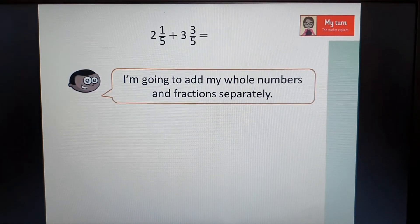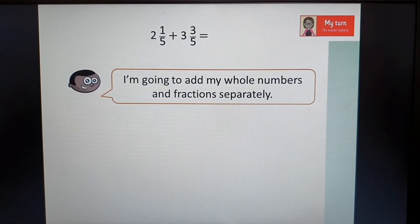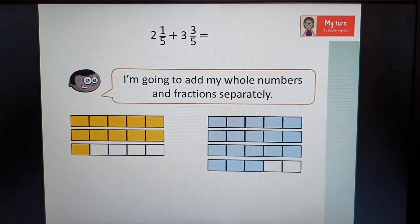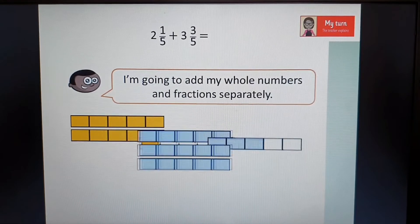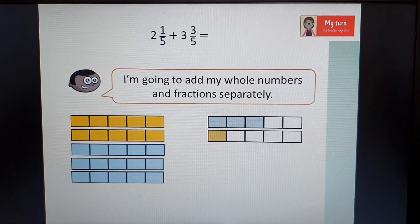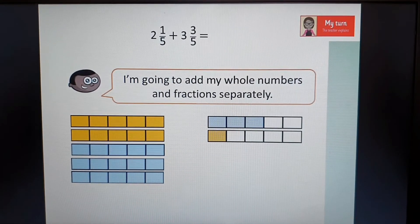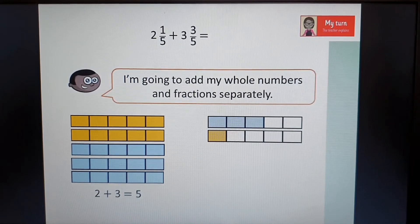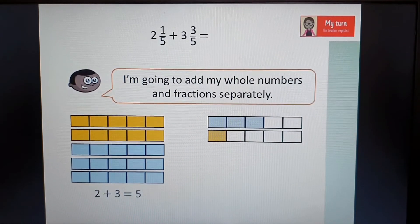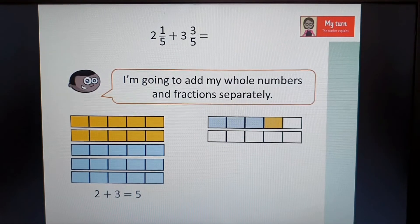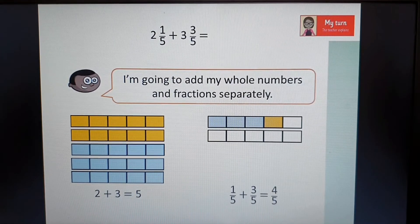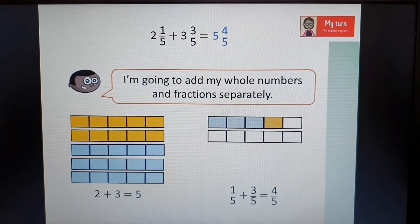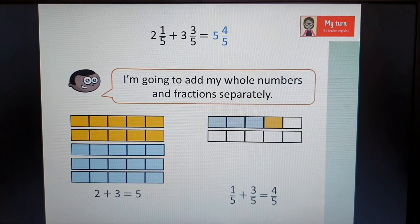This time I'm going to add my whole numbers and the fractions separately. So this is a different way to do it. I'm going to add the two wholes and the three wholes together, which will give me five. And then I'm going to add my one fifth and my three fifths. This gives me four fifths. Now I add my two answers together. I end up with five wholes and four fifths.